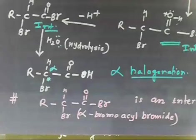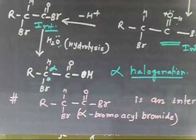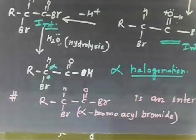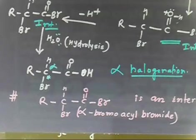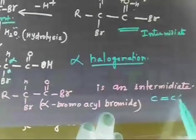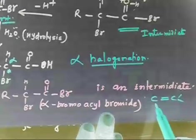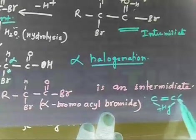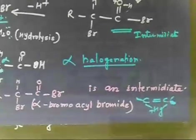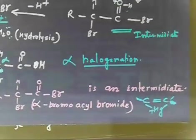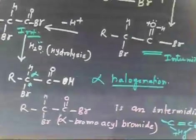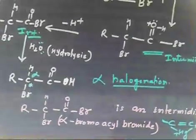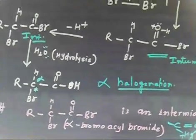To summarize intermediates across chapters: in aldehyde/ketone reactions you have a tetrahedral intermediate; in alkene reactions you have a bromonium or halonium intermediate; in the acid HVZ reaction you have alpha-bromoacyl bromide. In the alkyne chapter you have a mercurinium intermediate — a cyclic structure with Hg⁺. In some reactions, carbene is also an intermediate.